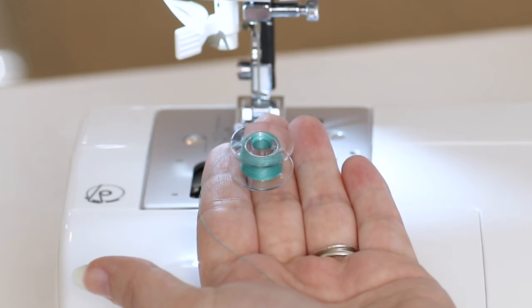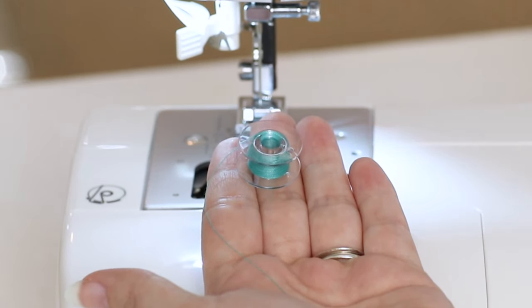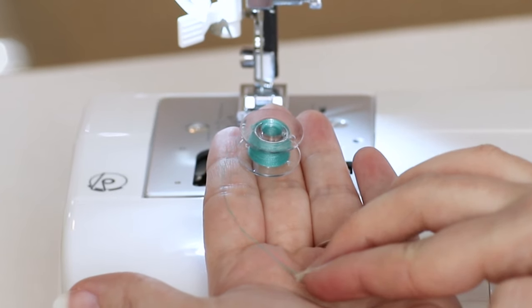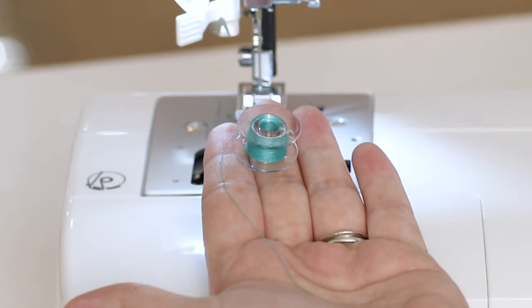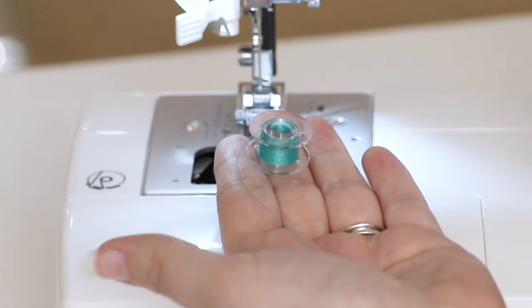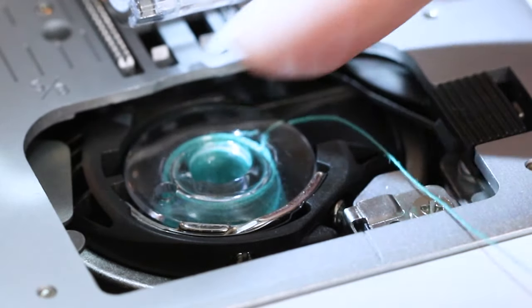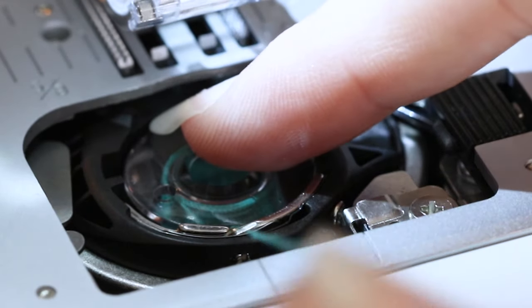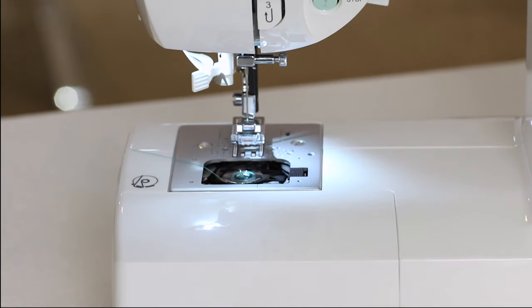Before you put your bobbin into the bobbin holder, make sure the thread is coming off the bobbin in a counterclockwise motion, or if there's a thread tail hanging down it will look like the letter P. P for perfect sewing. Place the bobbin into the bobbin holder, lightly hold the top of the bobbin, and bring the thread behind this metal notch and let it hang to the side.